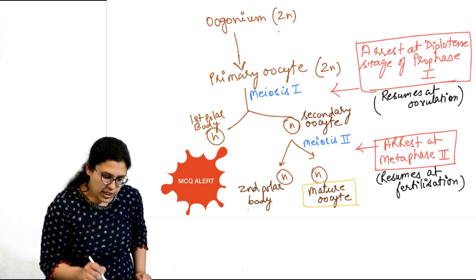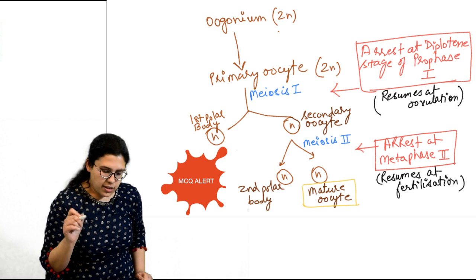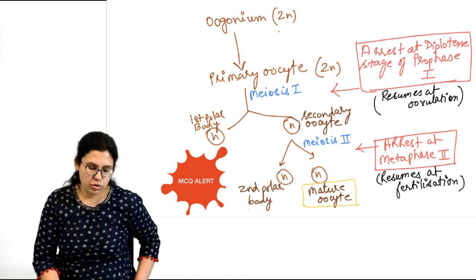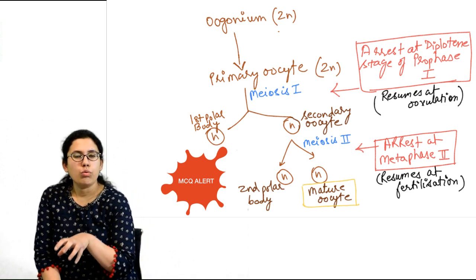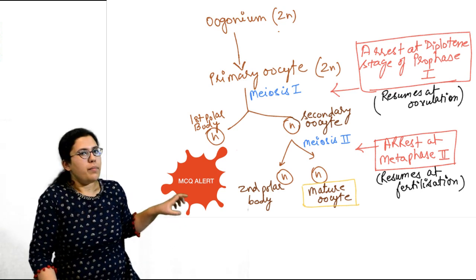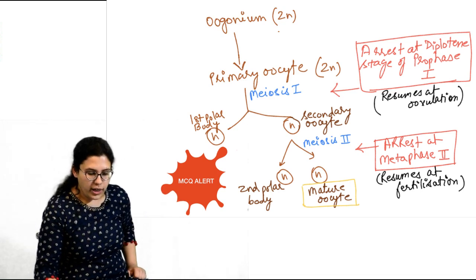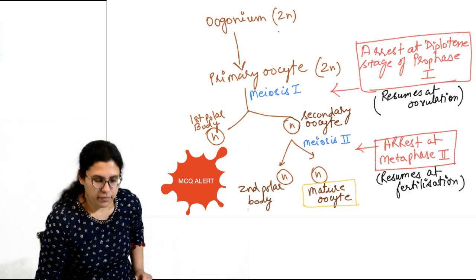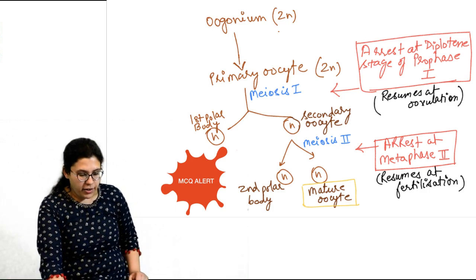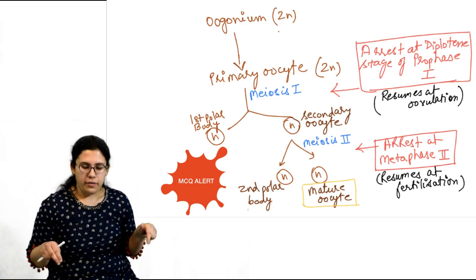This secondary oocyte undergoes meiosis 2. After completion of meiosis 2, it forms a mature oocyte and the second polar body is ejected. Importantly, there are two arrests that happen in this cycle.